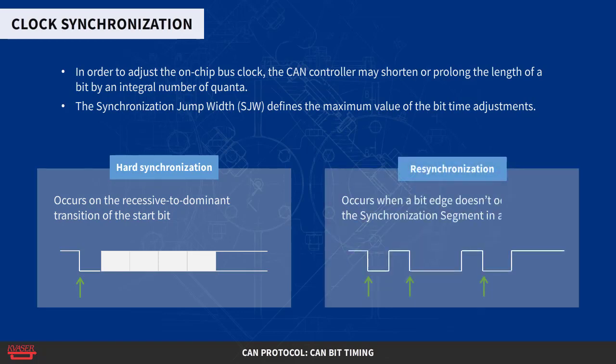Resynchronization occurs when a bit edge doesn't occur within the synchronization segment in a message. One of the phase segments is shortened or lengthened by an amount that depends on the phase error in the signal. The maximum amount that may be used is determined by the synchronization jump width parameter.